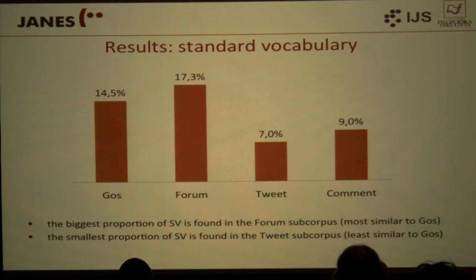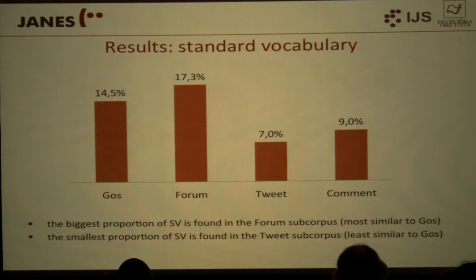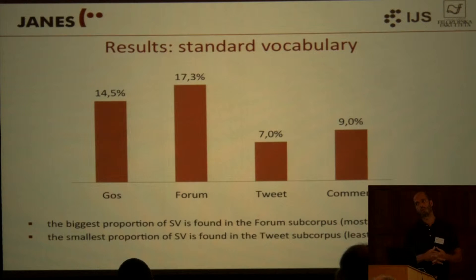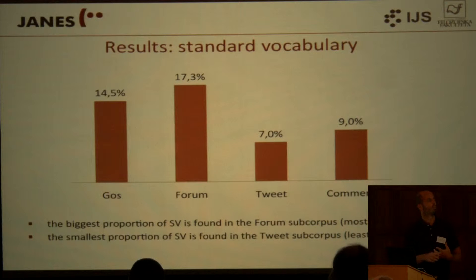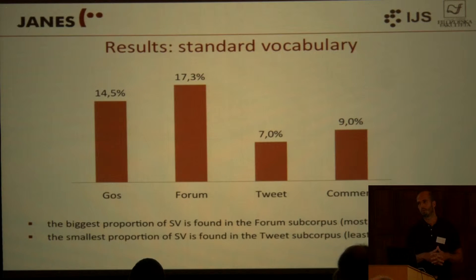Regarding results: the first insight is in the amount of standard vocabulary among the top 200 keywords. The GOS spoken corpus lies somewhere between all three genres of CMC, suggesting that spoken language is actually not less standard than CMC but somewhere in between. Among CMC genres, fora are the most standard and tweets are the least standard.